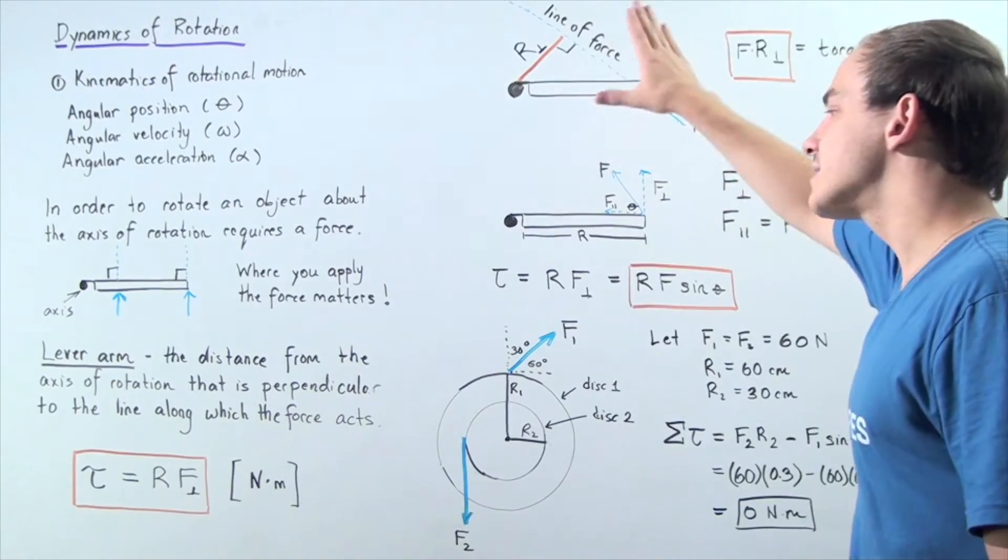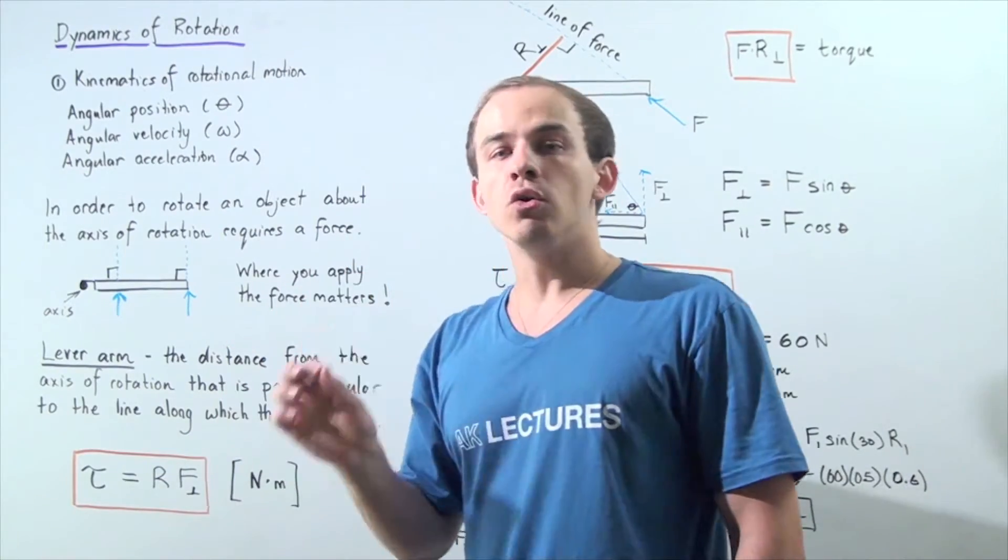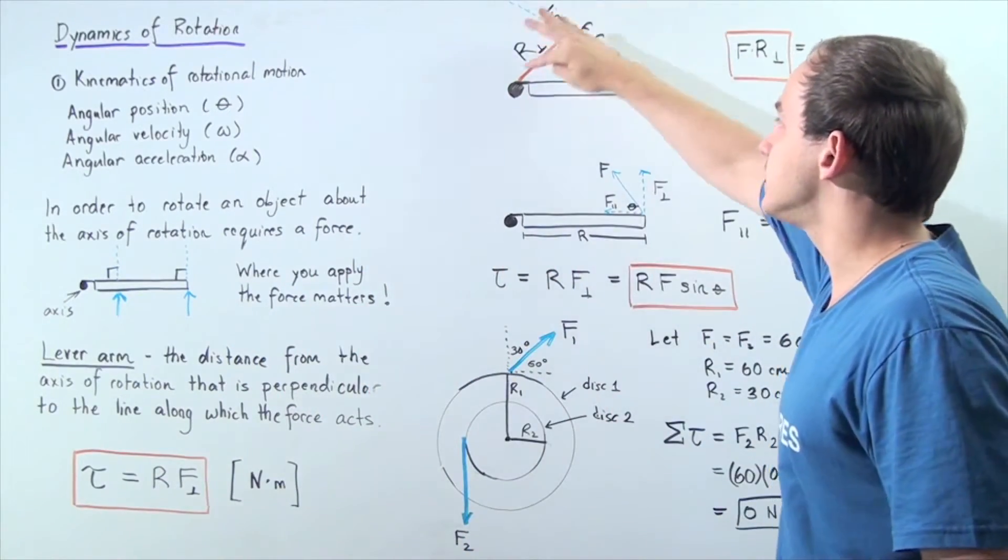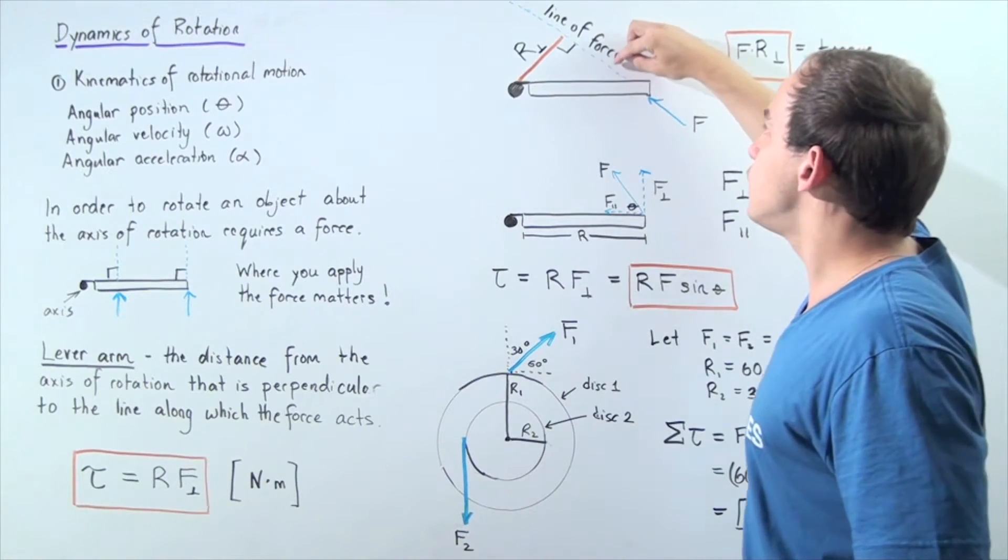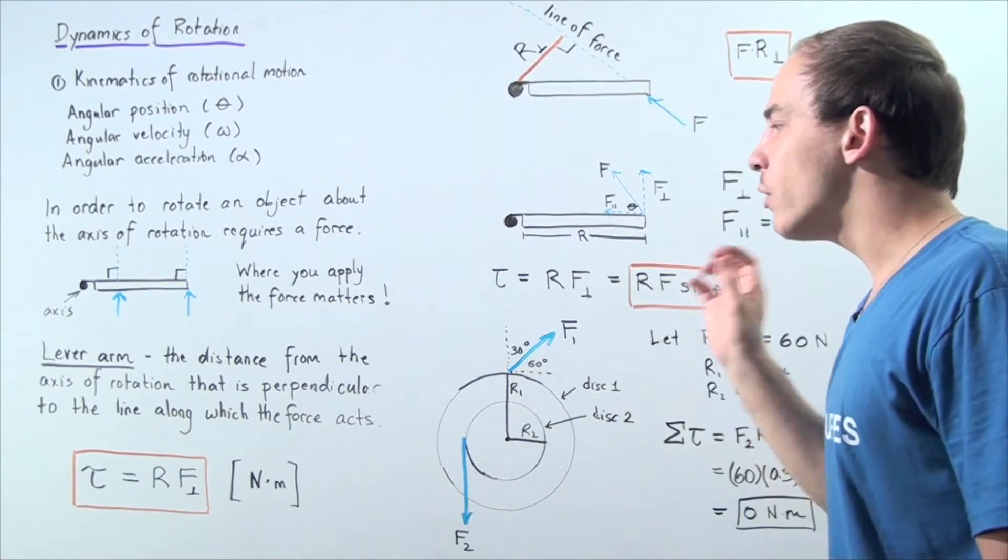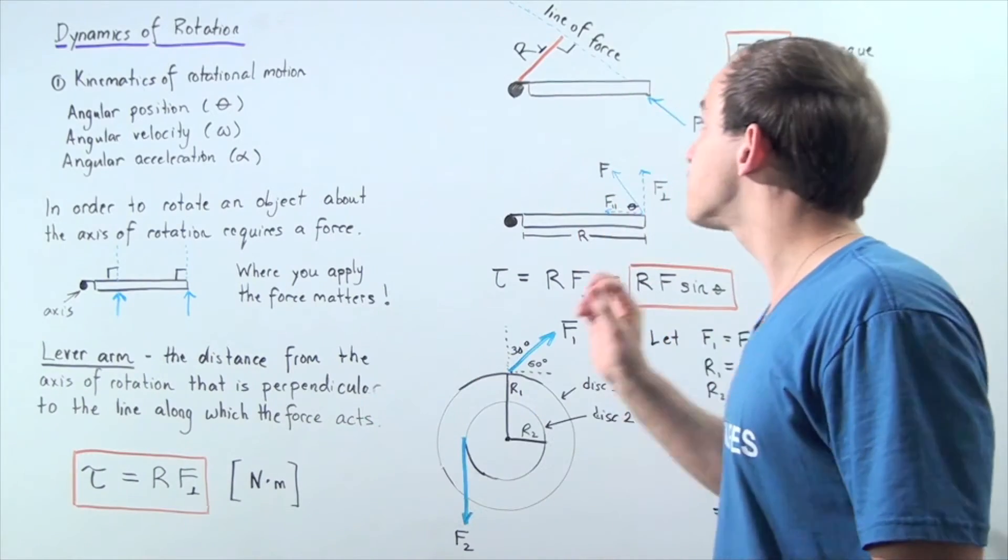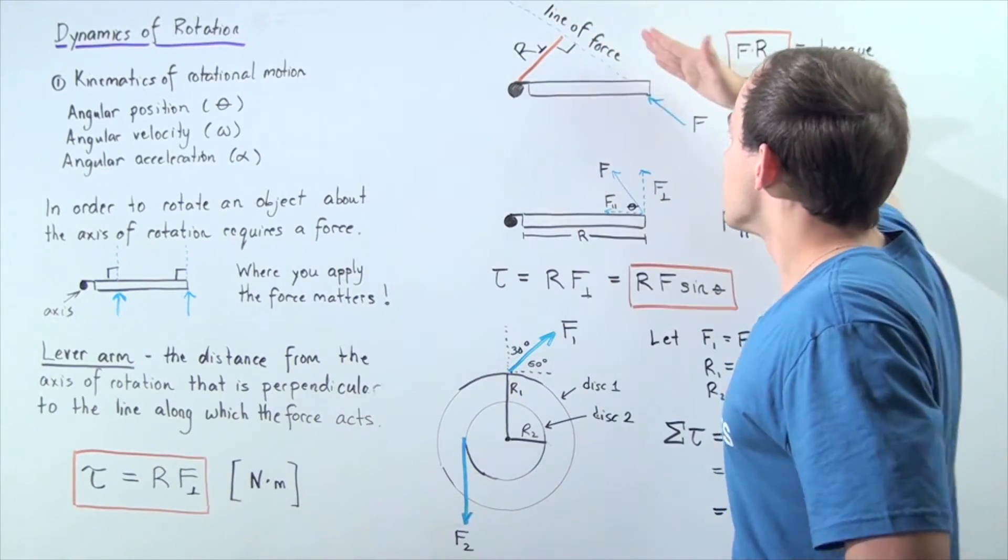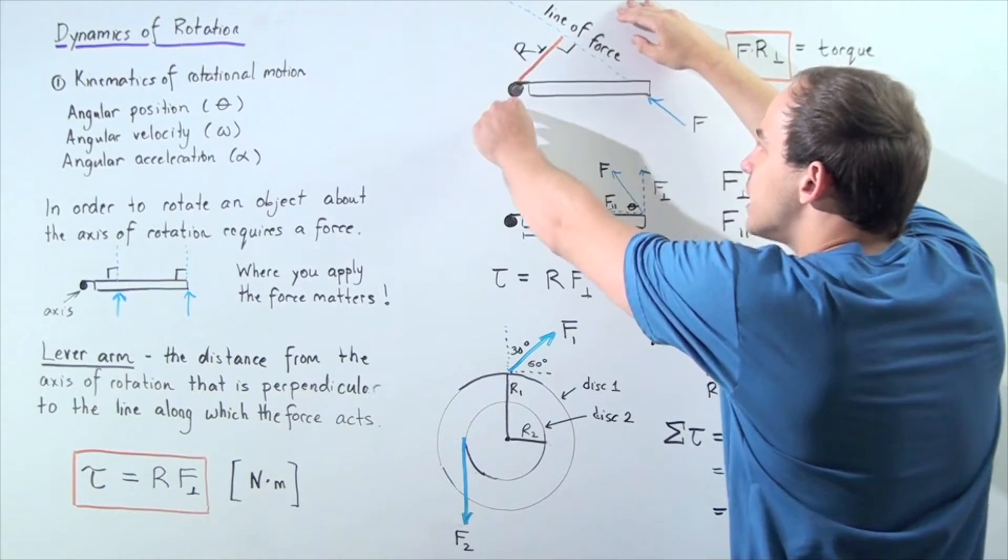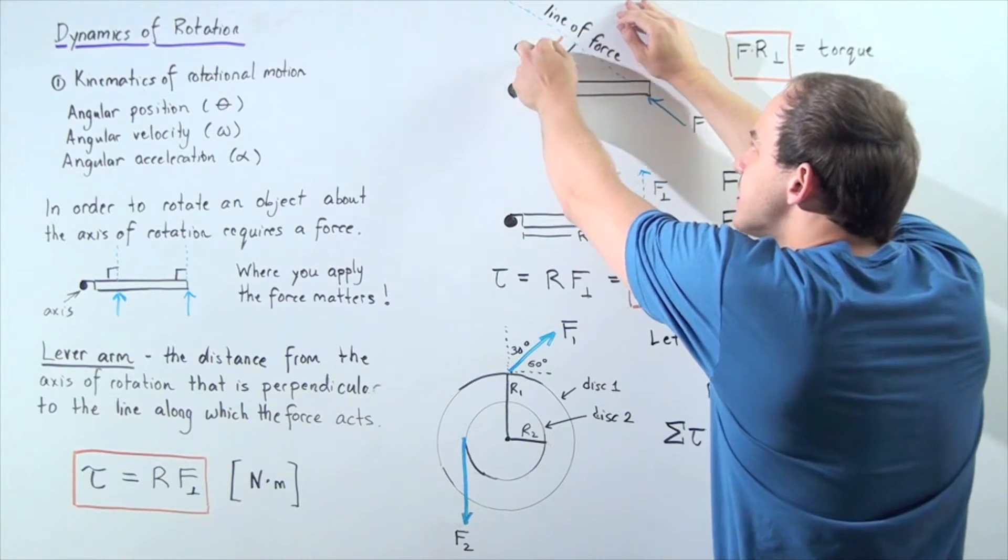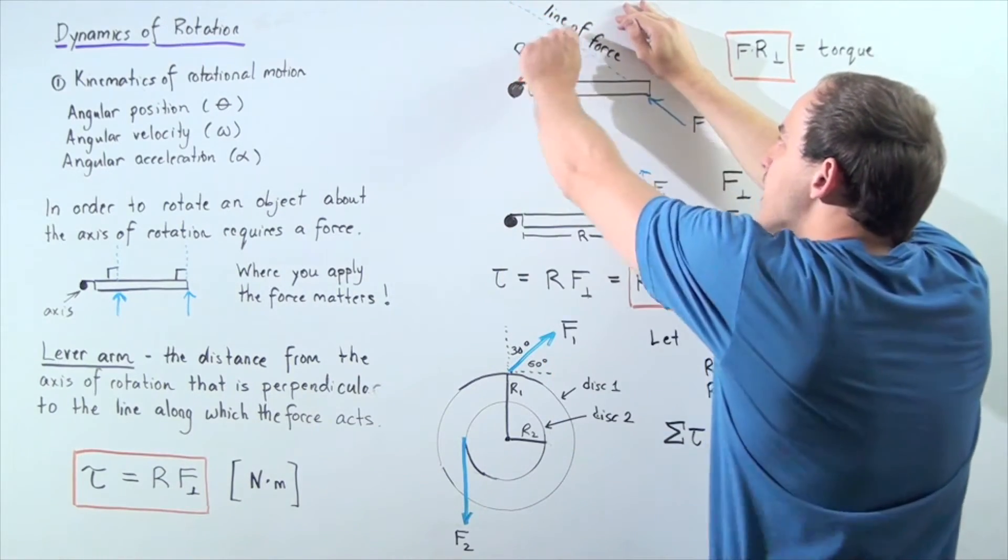Now let's look at a slightly different diagram. Let's suppose we have the same exact door but now our force no longer acts at a perpendicular angle to the door. Now the force is acting at a smaller angle. So the line of force points along this axis. If we extend this line of force and we draw a line from this position to the hinge, to the axis of rotation, well this is our new lever arm because this is the line that creates a 90 degree angle with respect to the line of force.